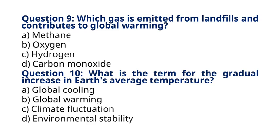Question 10: What is the term for the gradual increase in Earth's average temperature? A. Global cooling. B. Global warming. C. Climate fluctuation. D. Environmental stability. The correct answer to question 10 is option B: Global warming. Explanation: Global warming refers to the long-term increase in Earth's average temperature, primarily due to human activities.